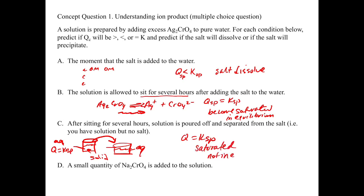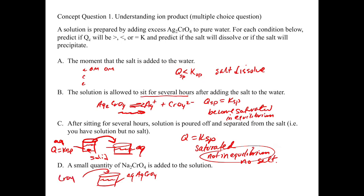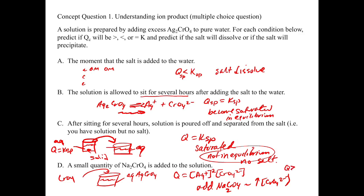A small quantity of sodium chromate is added to the solution. We have our aqueous solution of silver chromate that we poured off, and now we're going to throw in some chromate. Remember that Q equals the silver plus concentration squared times the concentration of CrO4 2-. When we add the sodium chromate, we're increasing the concentration of CrO4 2-. This is a common ion effect — it's going to cause Q to become greater than Ksp because now we have more chromate than we should, and we're going to get a precipitate. Those ions are going to precipitate out of solution and we're going to start to form some solid at the bottom.